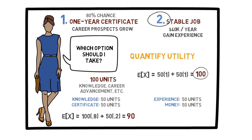Of course, if I changed the utility numbers or considered some other factors, it could all be different. But you get the general idea of the expected utility principle. The expected utility method can help us with some problems, but it does not give us all the answers. In the next few videos, we will dig a little deeper into some of the issues with different examples. We will discuss some common issues that arise, as well as other methods that can be used when the expected utility cannot be applied appropriately.